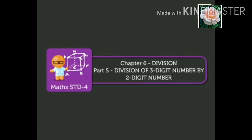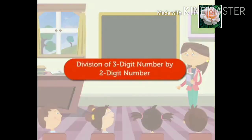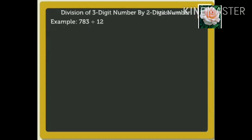Children, now let us learn division of a 3 digit number by a 2 digit number. The first example we have is 783 divided by 12. There are 5 steps to simple division. Let us see these steps while finding the quotient.